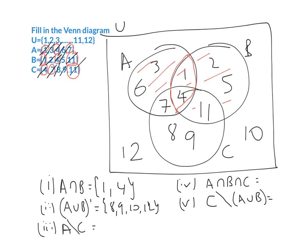Moving forward, the next one is A less C. That means I want everything in the A circle but nothing to do with the C circle — I always put my hand over the C circle. So I want everything in the A circle except where it's in common with C. Putting your hand over C, the only elements left are one, three, and six. Number four is A intersection B intersection C — that's what they all have in common, which is the number four. And the last one: C less A union B. I want nothing to do with the A and B circles, so putting your hand over A union B, what's left in the C circle is just eight and nine.